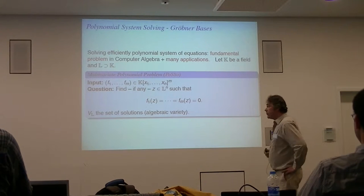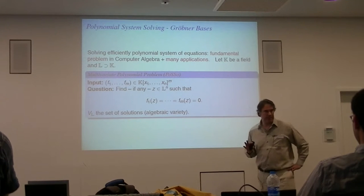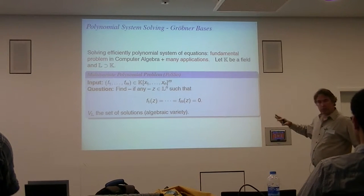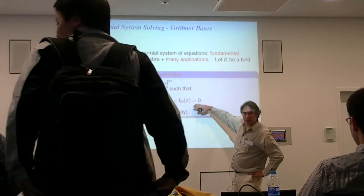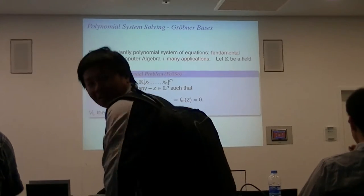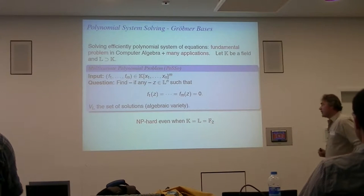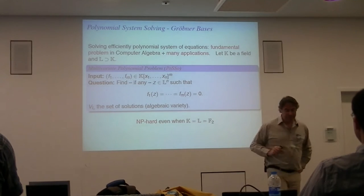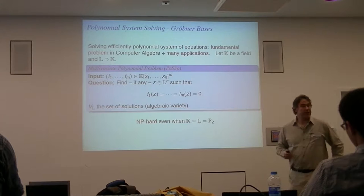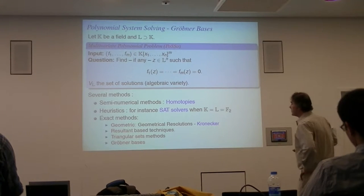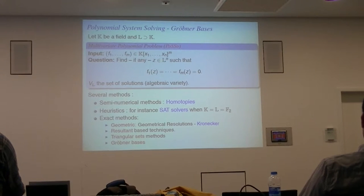In my team, what we want to do is to solve a system of polynomial equations. It is important to mention this because we don't want to compute only Gröbner basis or something else — at the end, what we want to do is to find all the solutions of the system. This is the general problem, and it is well known that this problem is NP-hard, even when the ground field is finite. So we know that you cannot have a polynomial time algorithm to solve this kind of problem. The Gröbner basis is one way to solve this problem, but it is not the only method.